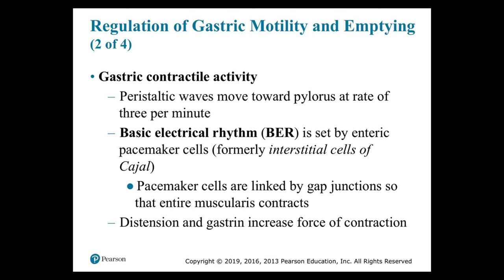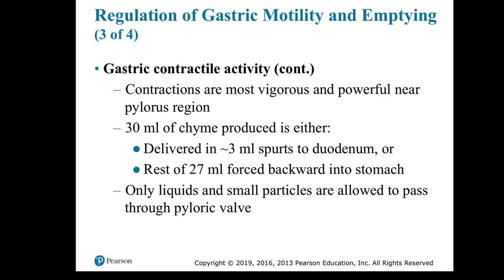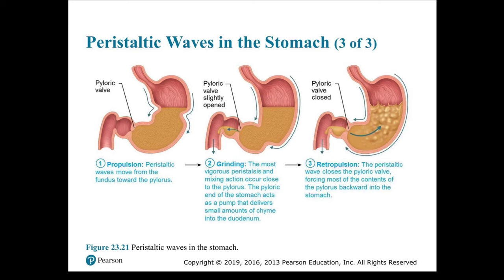Distension and gastrin increase the force of contractions, which are most vigorous near the pylorus. Of the 30 mL of chyme produced, 3 mL spurts are delivered to the duodenum while the remaining 27 mL is forced backward into the stomach. Only liquids and small particles pass through the pyloric valve. Figure 23.21 shows three stages: propulsion — peristaltic waves move from the fundus toward the pylorus; grinding — vigorous peristalsis near the pylorus pumps small amounts of chyme into the duodenum; and retropulsion — the peristaltic wave closes the pyloric valve, forcing most contents backward into the stomach.